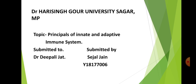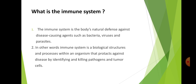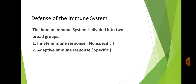The question is: what is the immune system? The immune system is the body's natural defense — it includes molecules, cells, tissues, and organs which provide non-specific and specific protection against disease-causing agents such as bacteria, viruses, and parasites. In other words, the immune system is the biological structures and processes within an organism that protect against disease by identifying and killing pathogens. Microbes capable of causing disease are called pathogens, and the ability to cause disease is called pathogenicity.